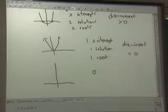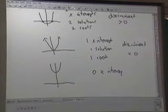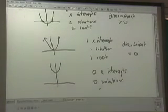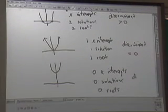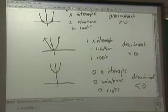And then the other case is when we have a parabola that doesn't touch the x-axis, we have zero x-intercepts, zero or no solutions, and zero roots. That's when the discriminant is less than zero.